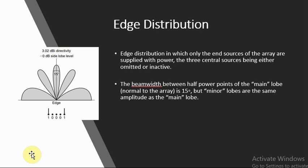Coming to the next classification, that is edge distribution. Edge distribution has power supply only at the end sources of the array, and central sources are inactive.